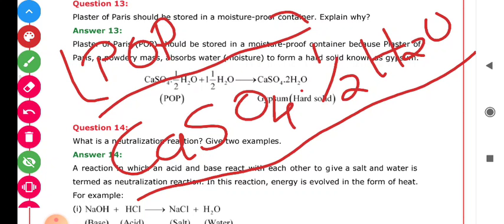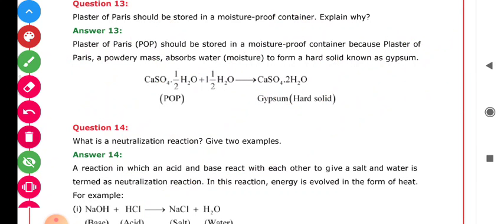So in order to prevent and in order to not make the P.O.P. convert into gypsum, we need to store it in a moisture-proof container. This is the basic reason which is already mentioned here: Plaster of Paris, a powdery mass, absorbs water to form a hard solid known as gypsum.